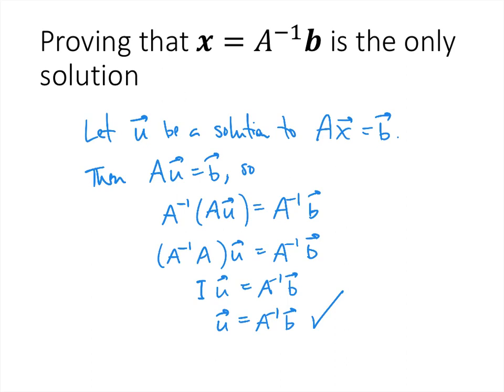Notice that we used both definitions of inverse: A times A inverse is the identity, and A inverse times A is the identity. We really do need both of those pieces to define an invertible matrix.